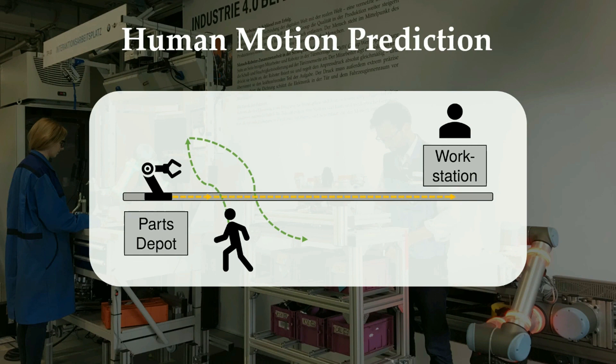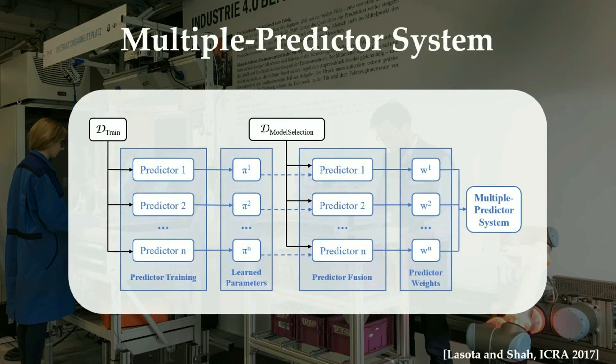To accommodate this requirement, we use the multiple predictor system. This data-driven approach combines several complementary prediction methods to decide which of these predictors should be used for each time horizon.